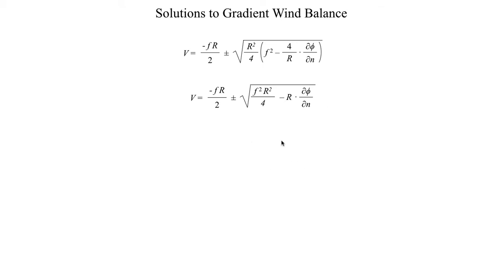I do want to draw your attention to this stuff going on underneath the square root here. Let's suppose that this quantity R times dφ/dn is zero. That would mean I just have the square root of f²R²/4, which would just be fR/2. So if this term is zero, then I basically am just left with fR/2, which is the same exact term that we have over here. That's going to be something we do want to keep in mind going forward once we start interpreting the result we get from solving this equation.